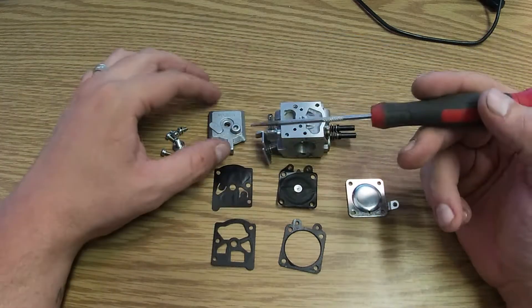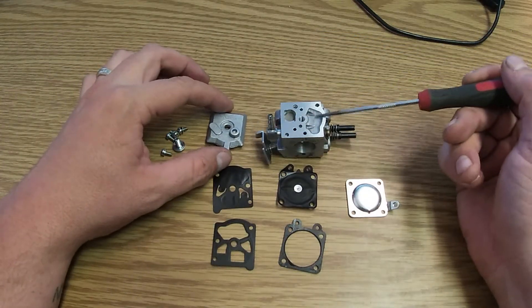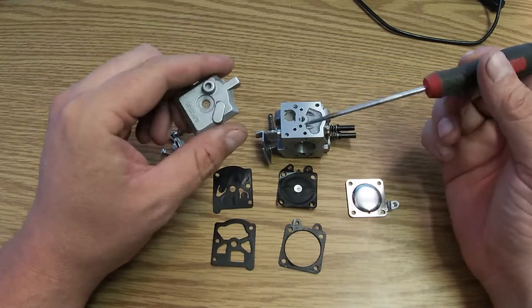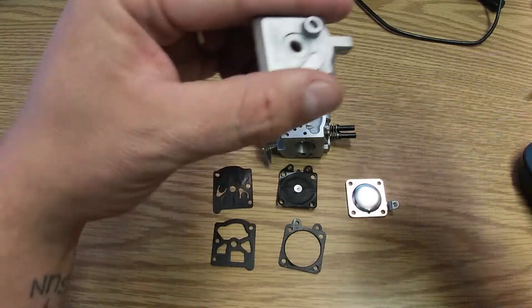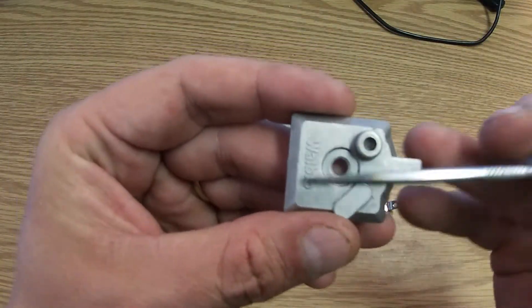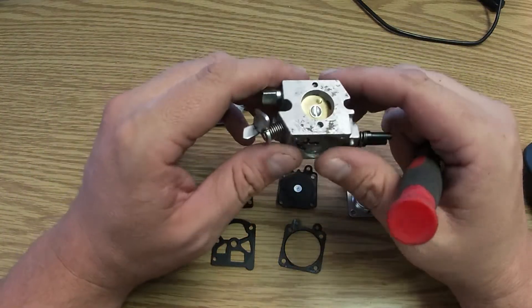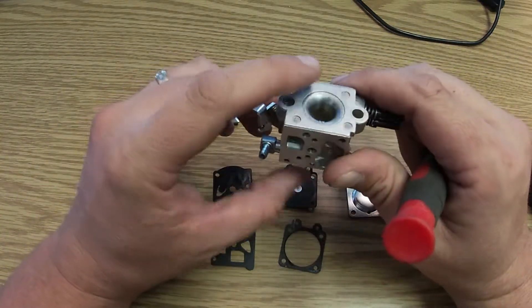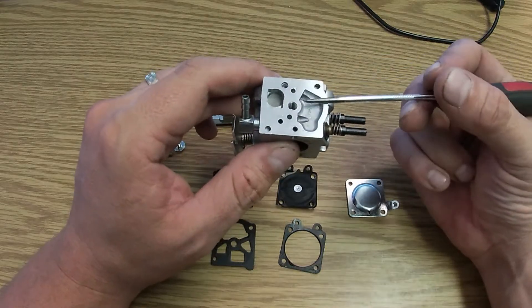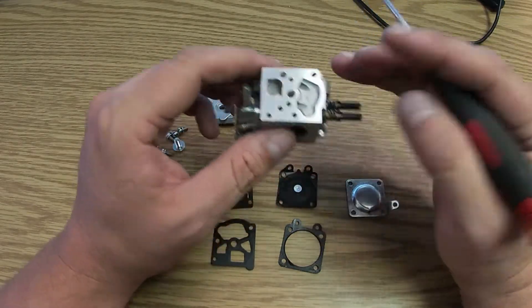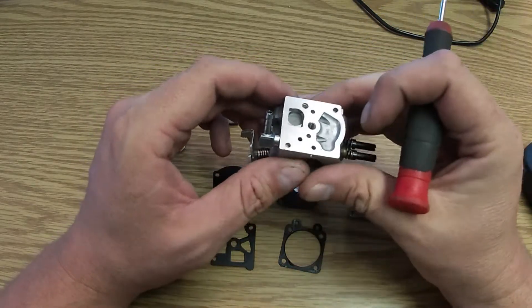So right here we have a Walbro carburetor. This is on a Tanaka chainsaw and it's going to be pretty much the same on every single carburetor. So we've got a Walbro carburetor, but like I said you've got these cube box carburetors and they're a lot different than four-stroke carburetors. That just requires some air and a main jet most of the time.